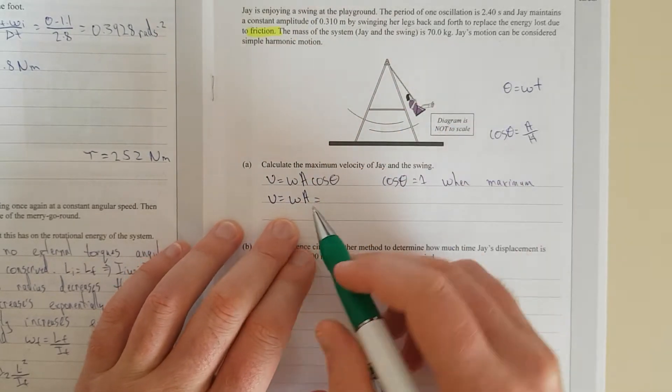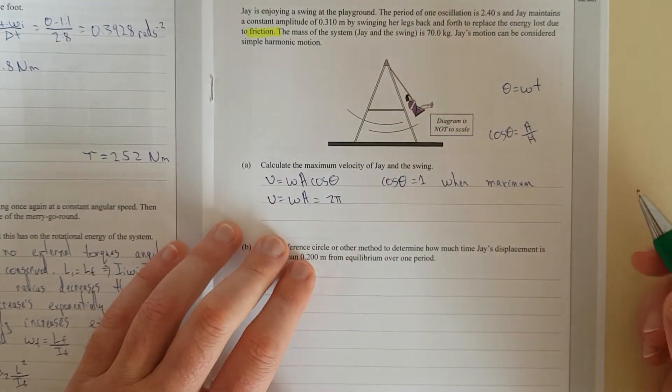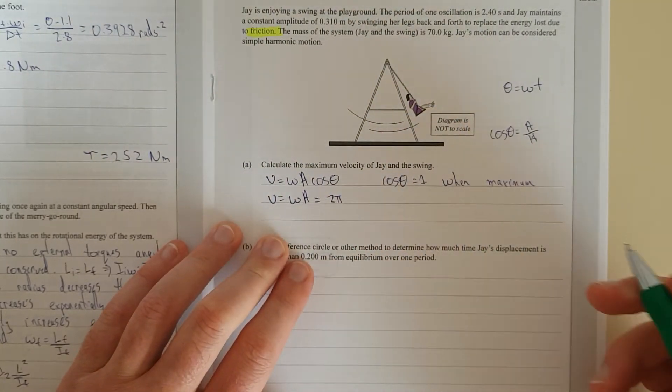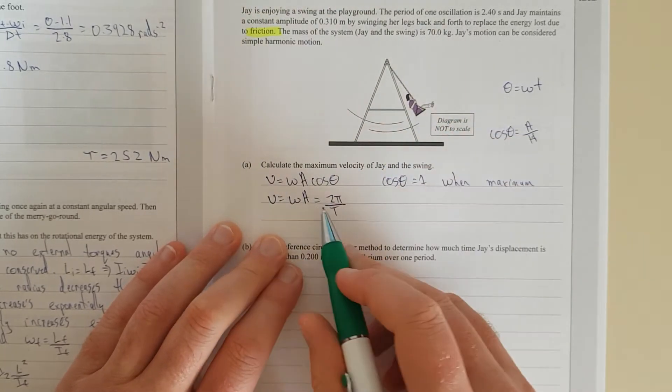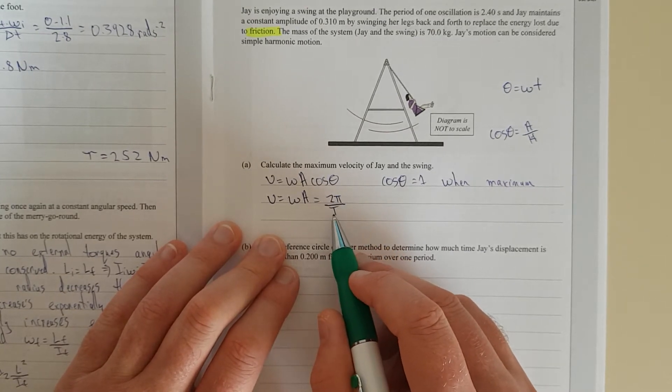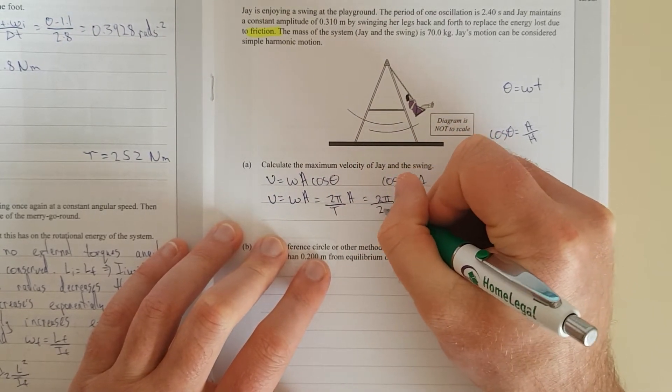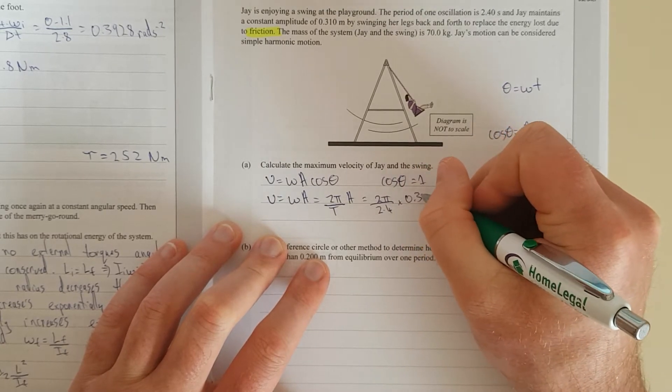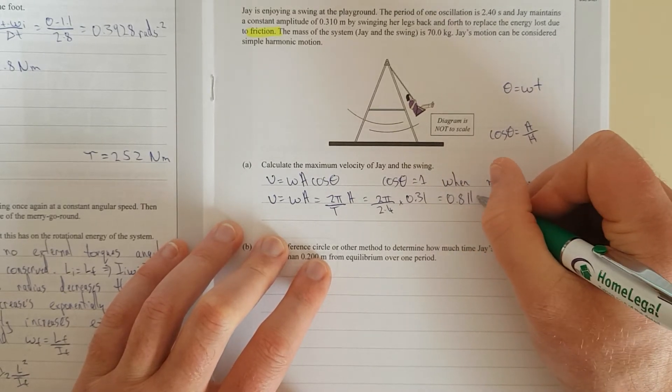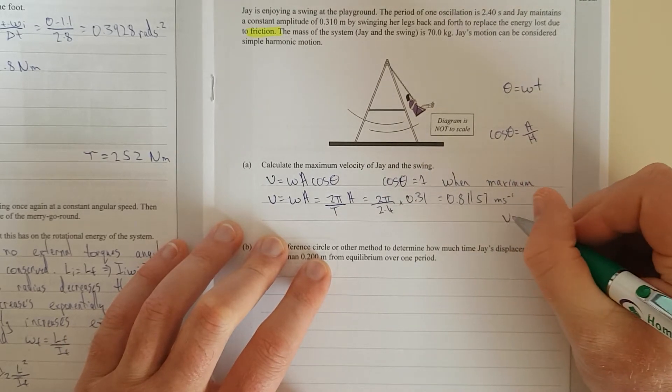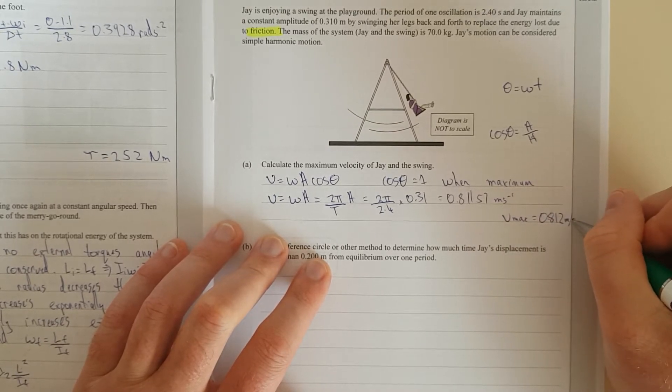And that is equal to, we don't have the angular velocity. We have the period. In the formula sheet, you'll have 2 pi f. But because we have the period, frequency and period are inversely related. So, it's going to be divided by the period, which would be T. So, that's the formula for angular velocity, 2 pi over T. Times the amplitude, which is equal to 2 pi divided by 2.4 times 0.31. And that is equal to 0.81157 meters per second. Vmax is equal to 0.812 meters per second.